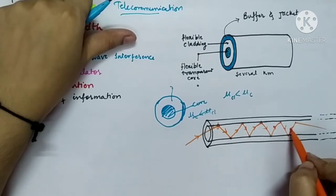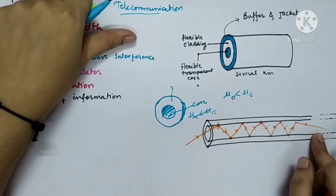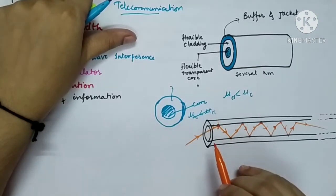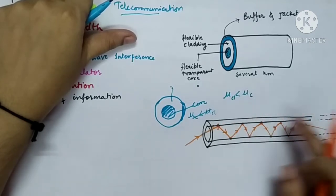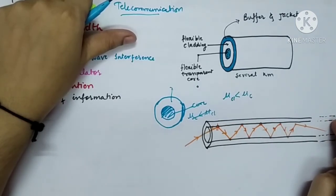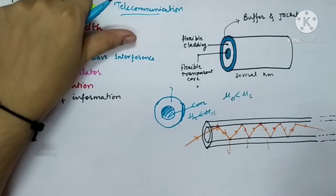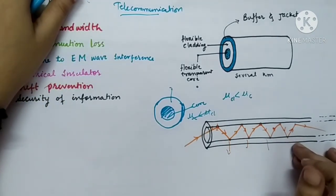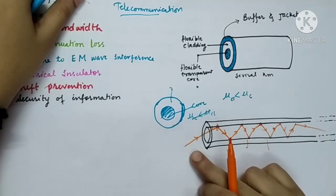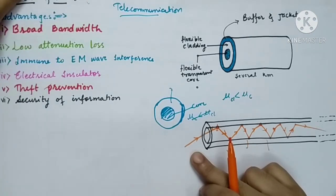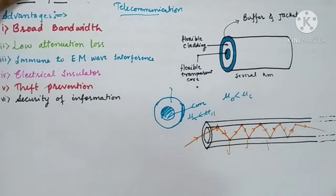Due to total internal reflection, the entire light ray passes through the fiber without any leakage to the cladding. No light ray moves toward the cladding — only at the end point of the fiber do you get the light signal. There is no leakage from any intermediate point. Total internal reflection is the base principle of optical fiber.